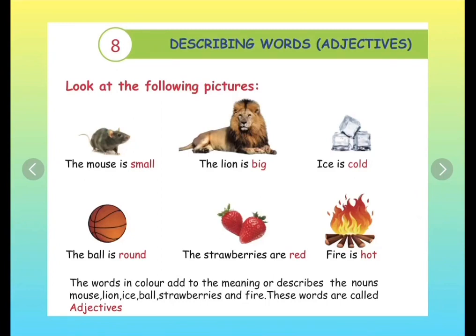So students, on this page you can see some words written in red colour. And which are they? Yes - small, big, cold, round, red, hot. These words are describing the given pictures. These words are called adjectives, which means they are describing words.